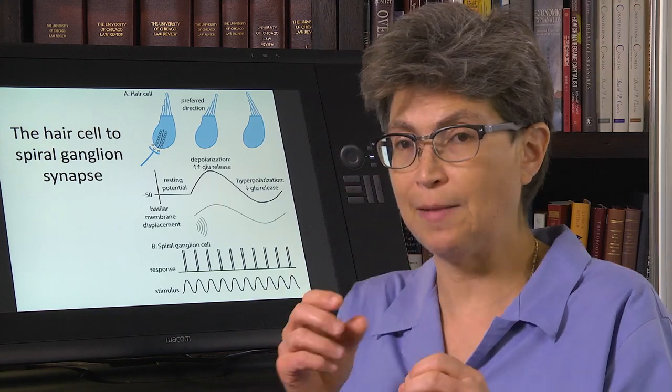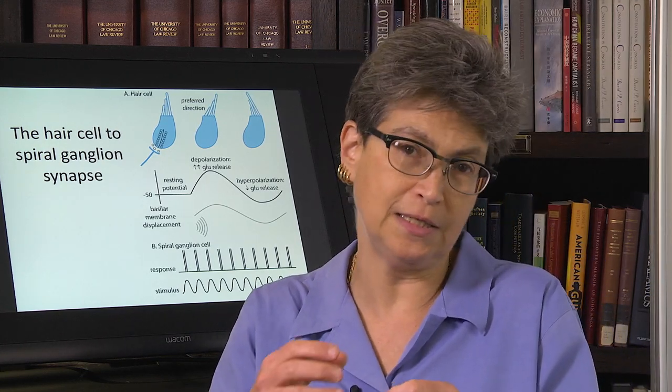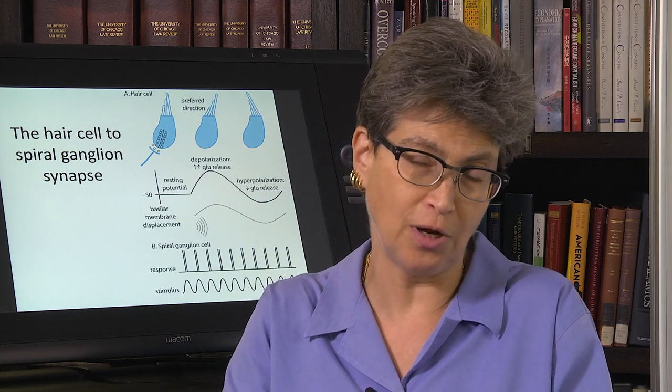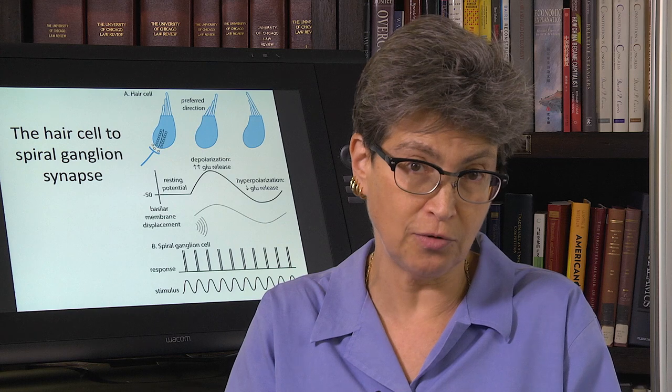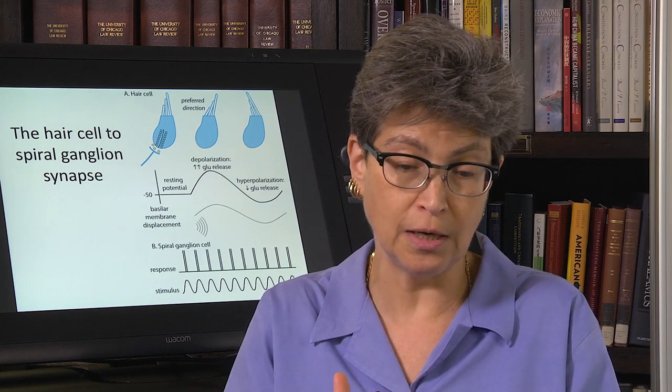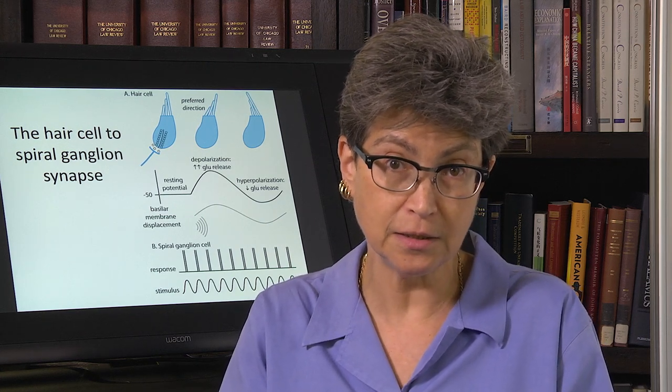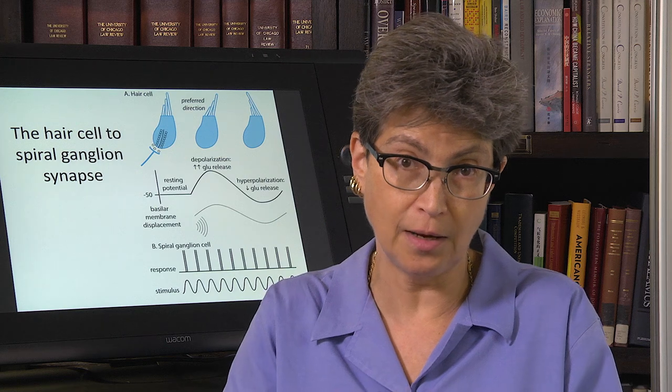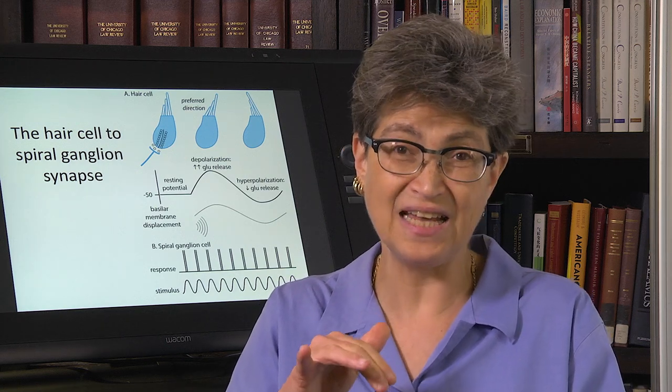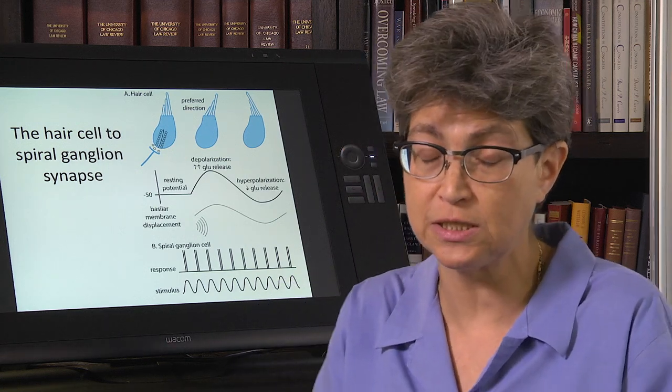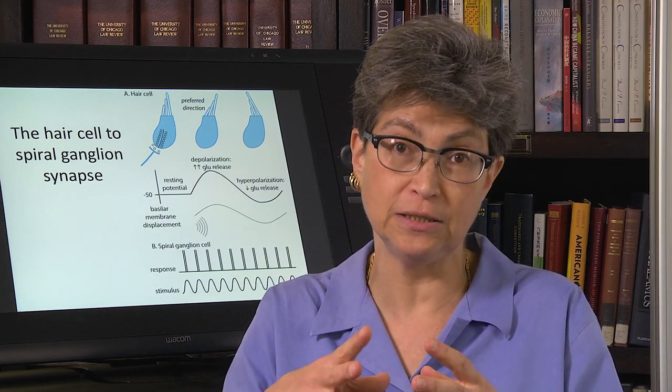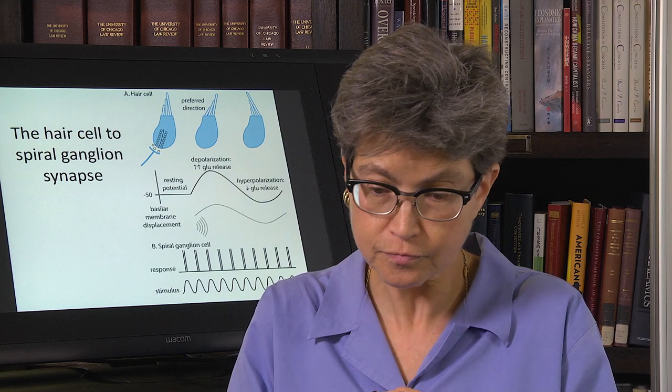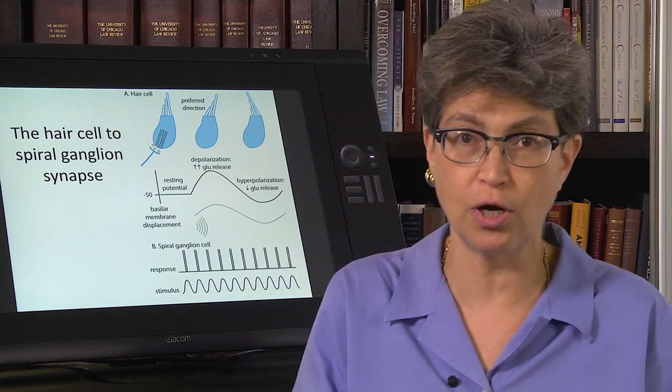The other thing that can go wrong is that MET channel, it's opening, it's a nonspecific cation channel. And not only can cations go through there, but some nasty stuff can go in there too. So certain aminoglycoside antibiotics and certain chemotherapeutics, such as cisplatin, will go in through the MET channel and kill the hair cells.